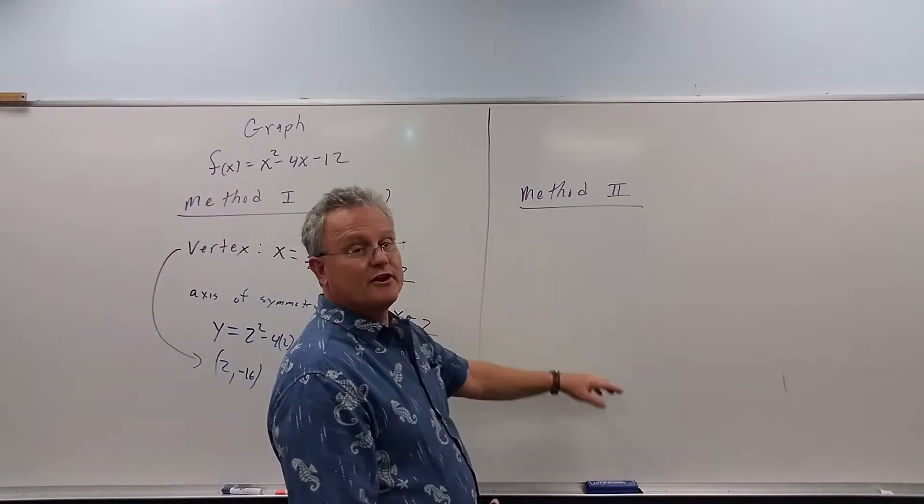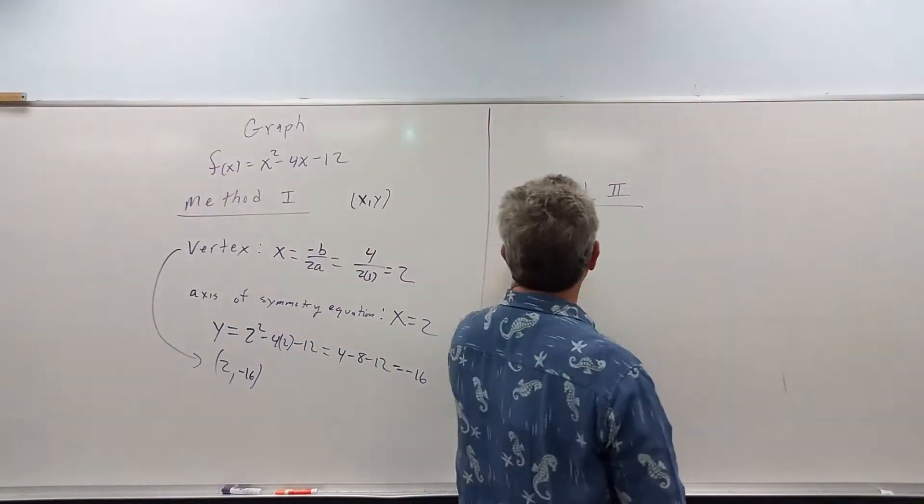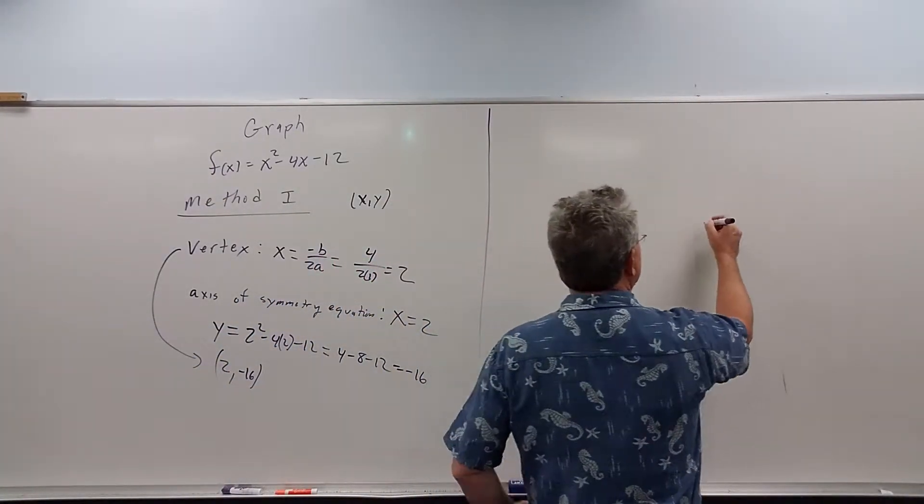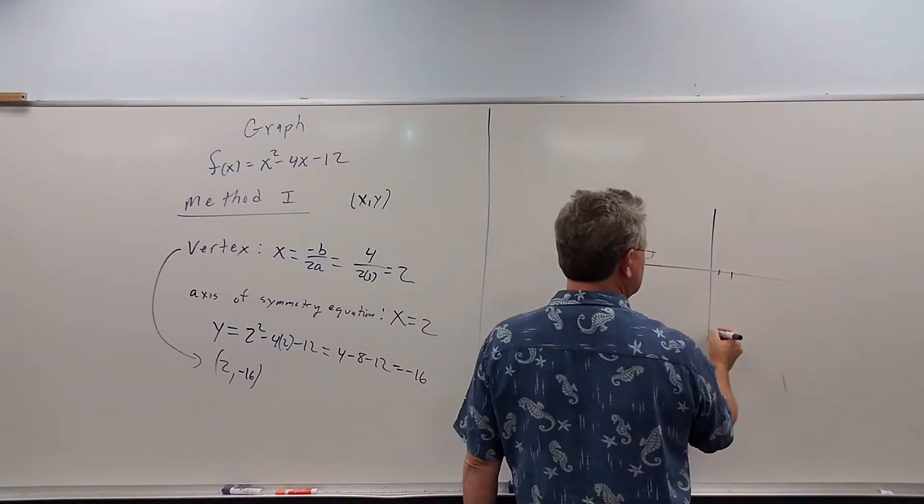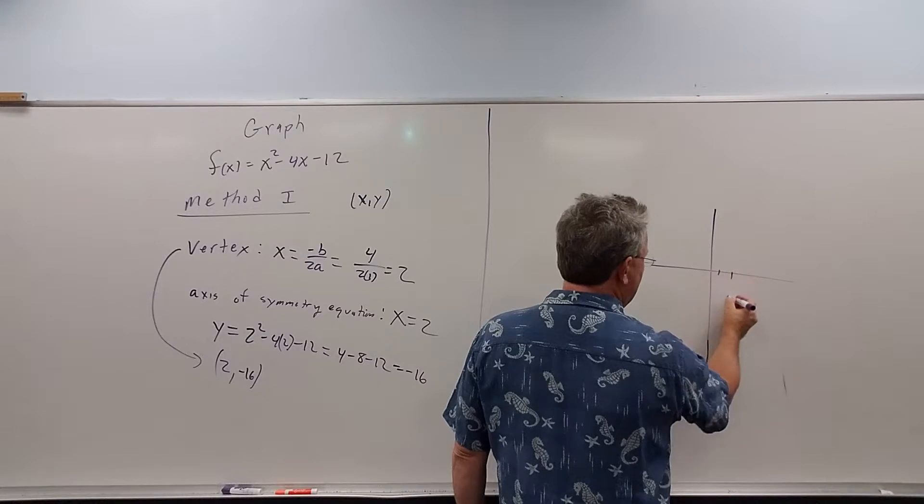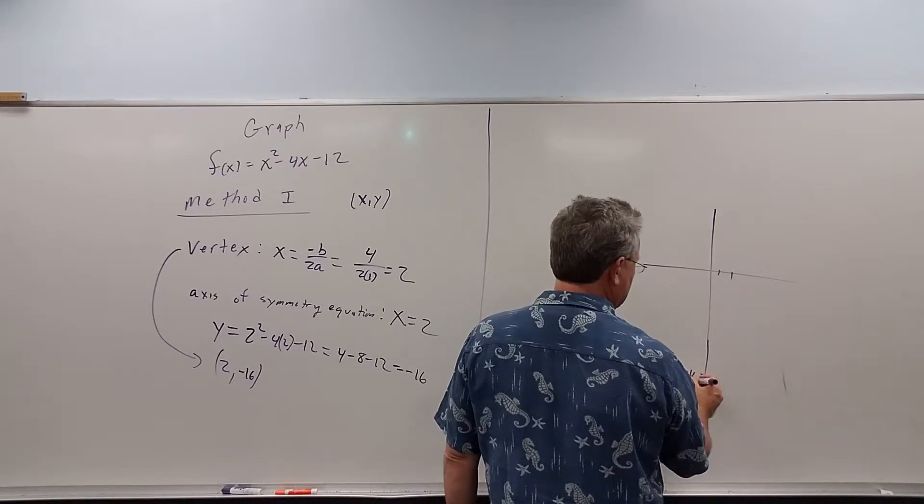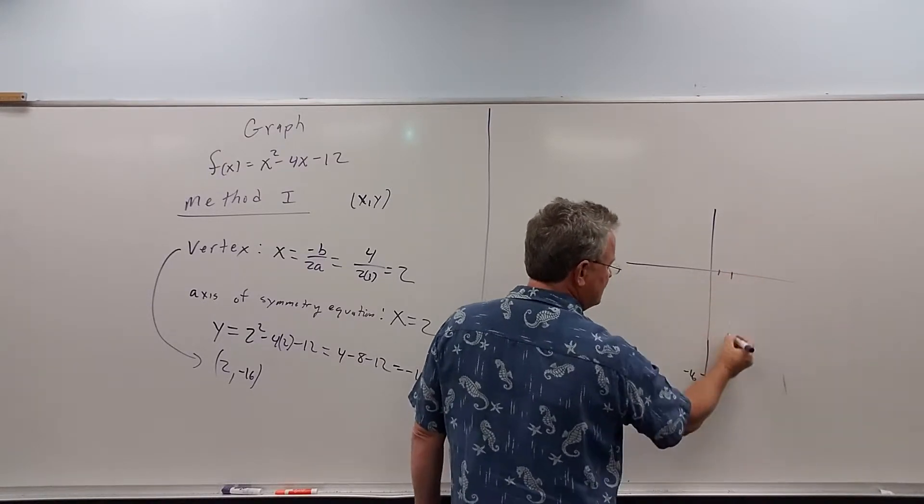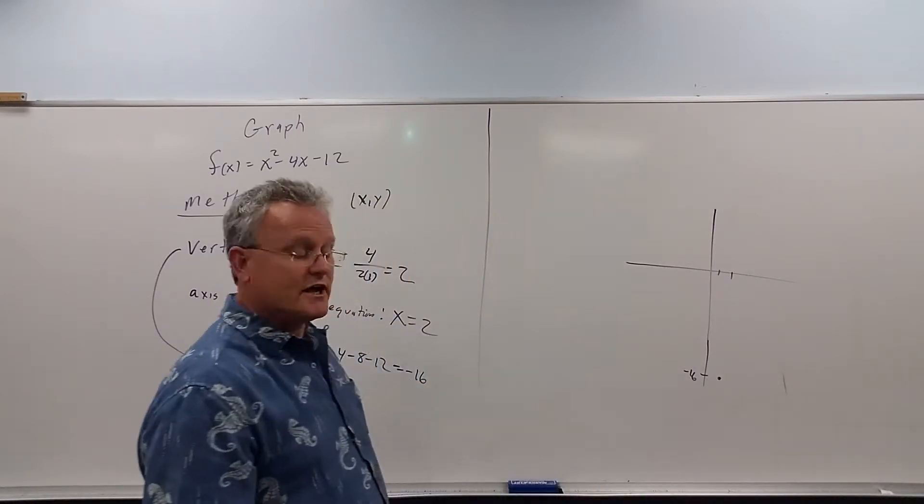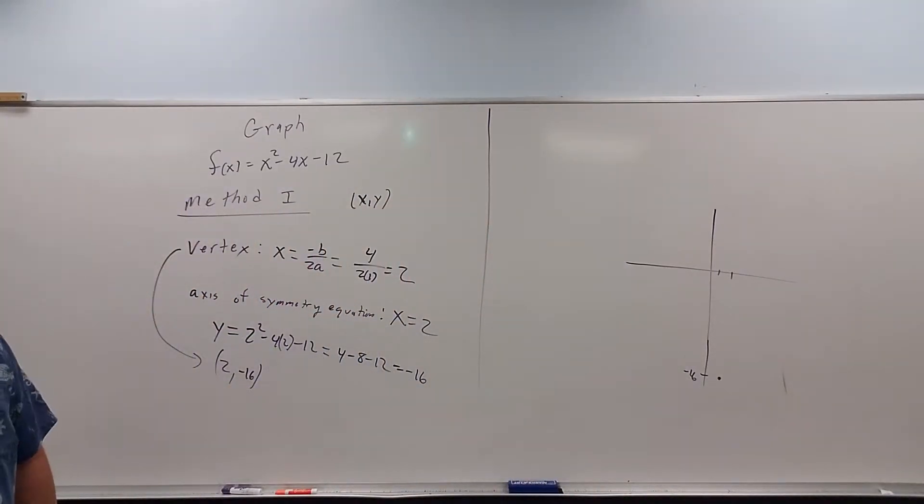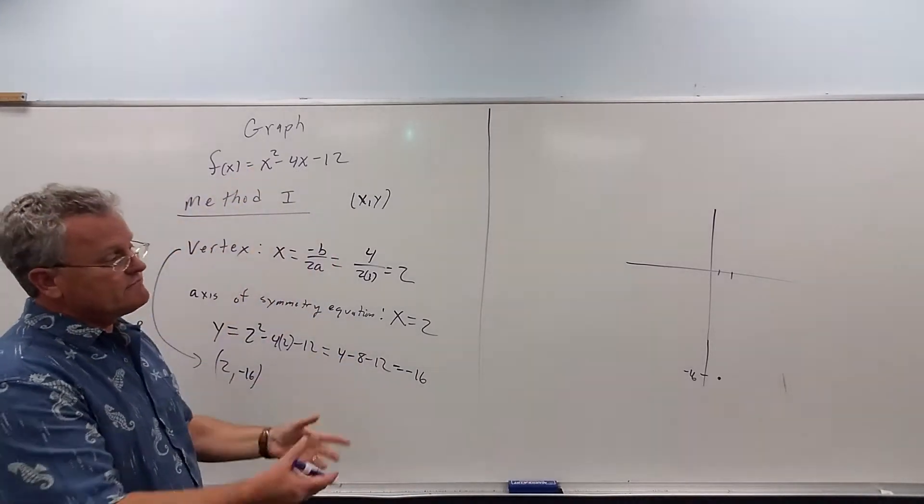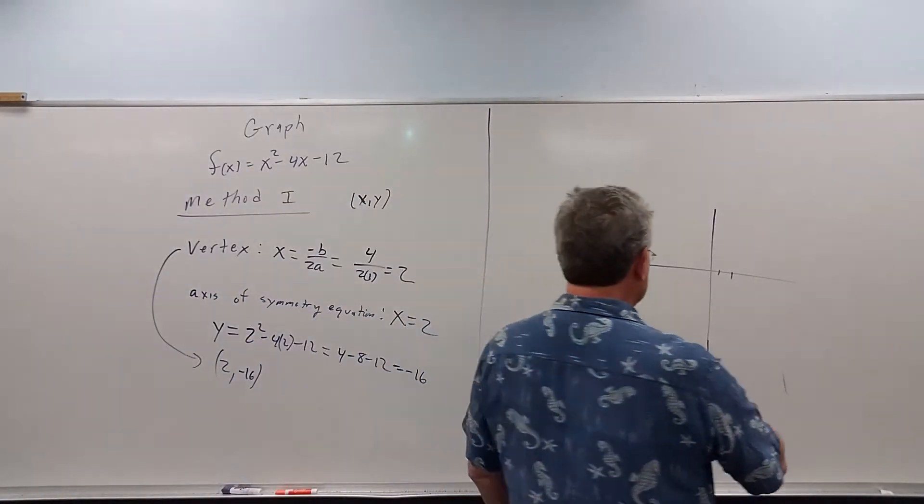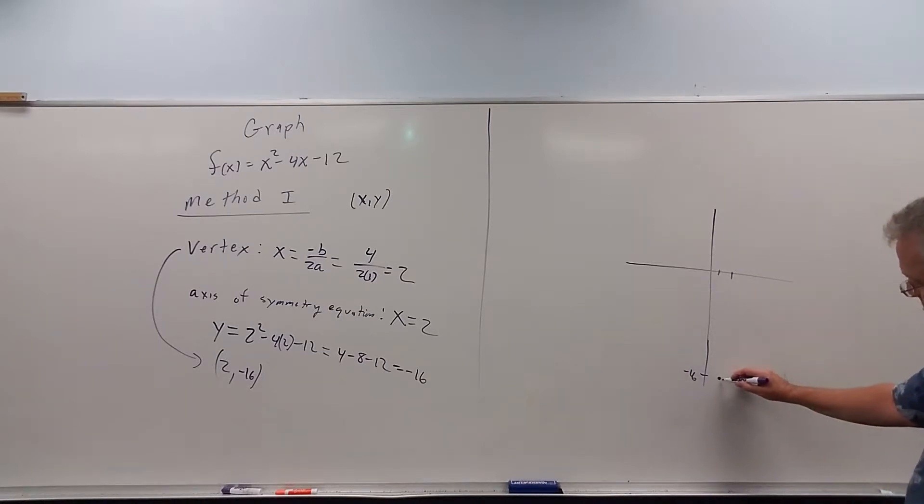All right. So let me graph that over here, and then I'll write this back when I do method 2. So to graph this, we go to the point x is 2, and then we go all the way down here somewhere to negative 16. So that is where the vertex is. Now we know it's going to open upward because the number in front of x squared is positive. The only thing we need to know is when we come up, where is it going to cross the x-axis?